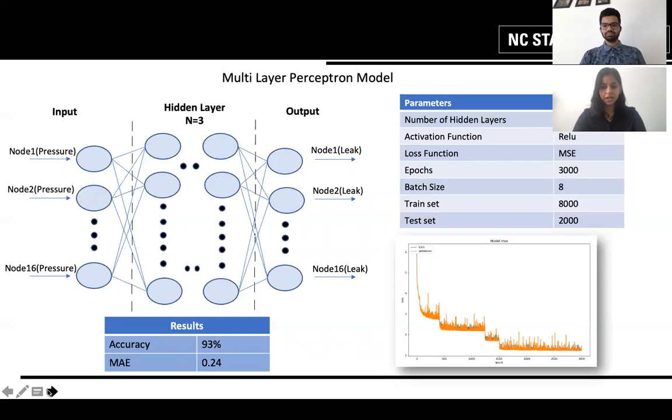We have the mean squared error as the loss function, ReLU as the activation function, epoch size, batch size, everything is fixed for all the remaining slides as well. In this particular problem, we treat it as a regression problem and we try to regress and identify the leak value sizes.